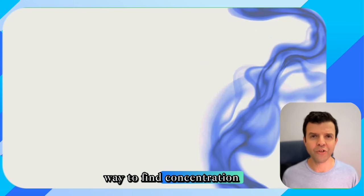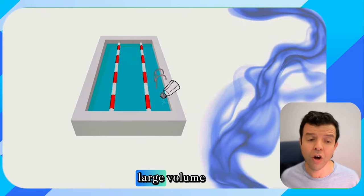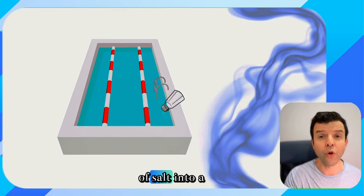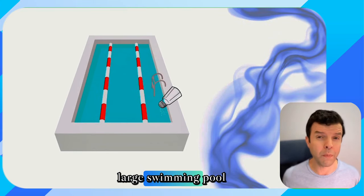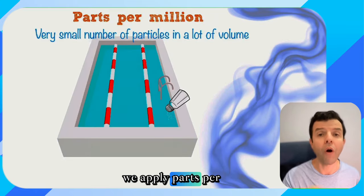There's another way to find concentration especially if it was very small. I'm talking here about few millimoles in large volume. So think for example we're adding a pinch of salt into a large swimming pool. To find concentration in this way we apply parts per million.